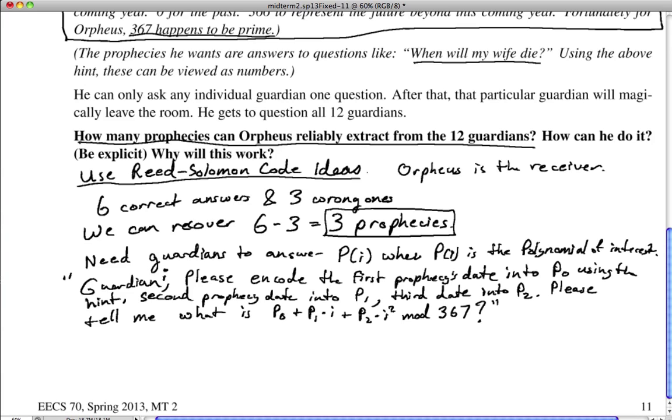So notice now we have an exact question. We ask the question to the guardian, it's a compound question, please encode the first prophecy date into p0, using the hint, second prophecy date into p1, third prophecy date into p2. And then, please, guardian, please tell me what is p0 plus p1 times i, plus p2 times i squared, mod 367. And so you ask guardian I this question. So you choose one guardian, you call him guardian 1, call him another guardian 2, another guardian 3. So we can say assign guardian's numbers from 1, 2, 3, all the way up to 12. So we have to check, are 1 through 12 within the finite field of interest? Yes, they are, they all fit within 367.